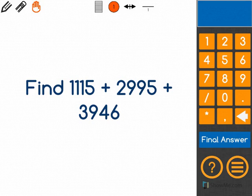Let's read this math problem. Find 1,115 plus 2,995 plus 3,946.